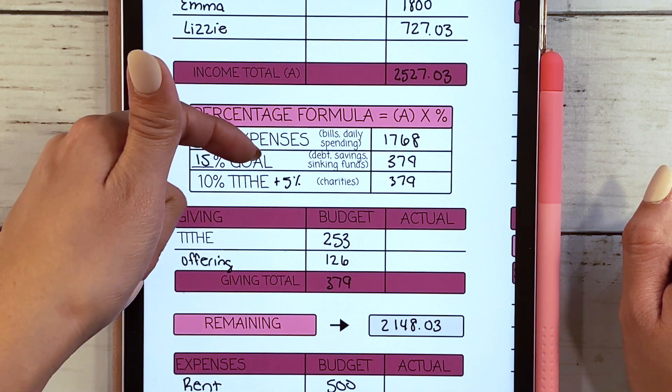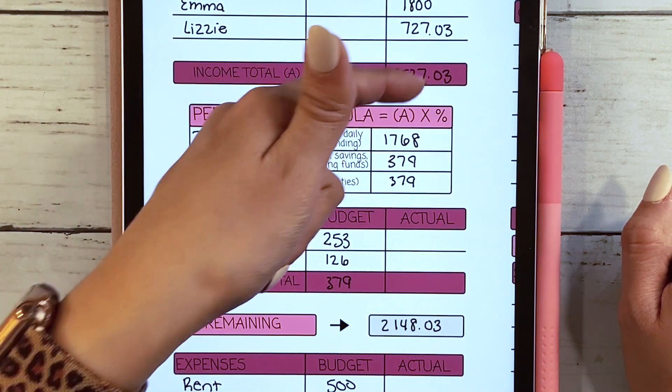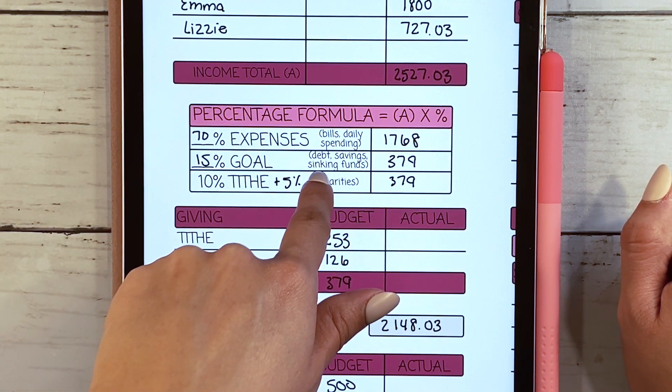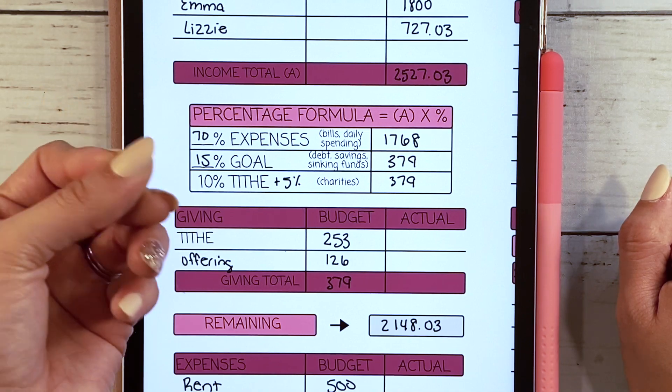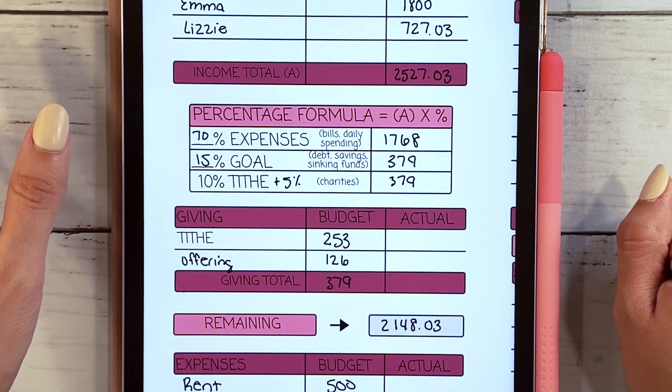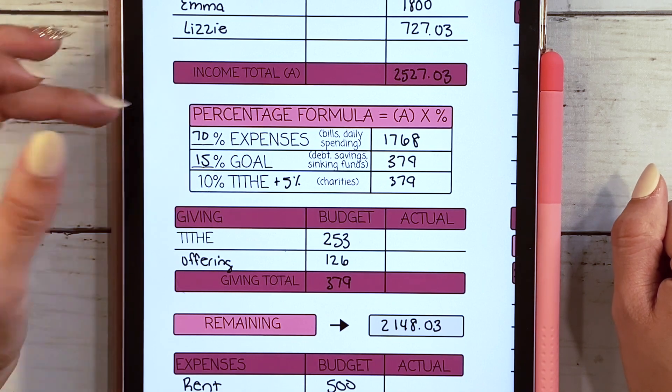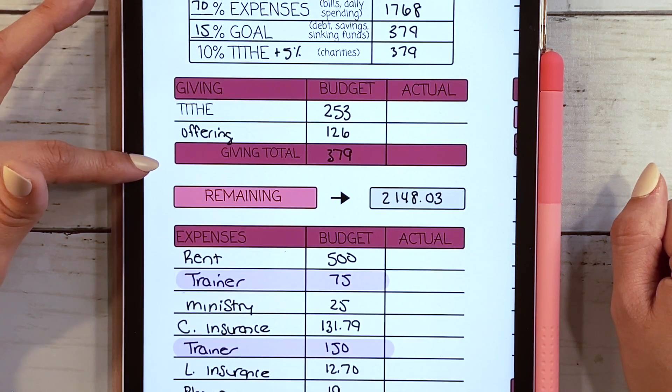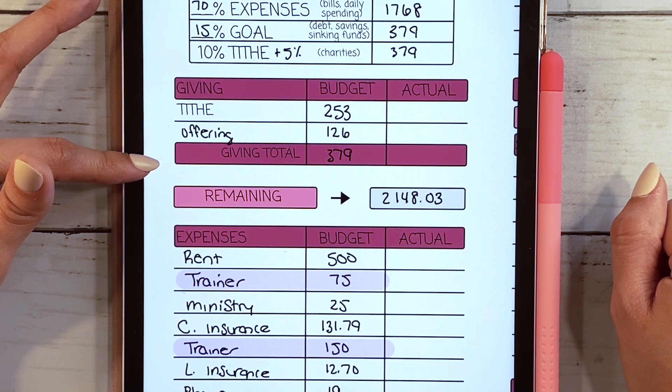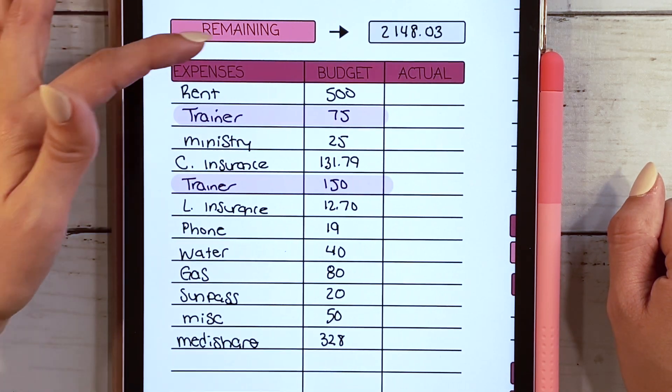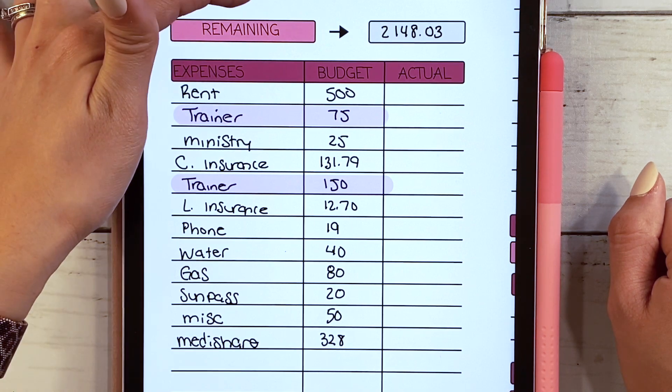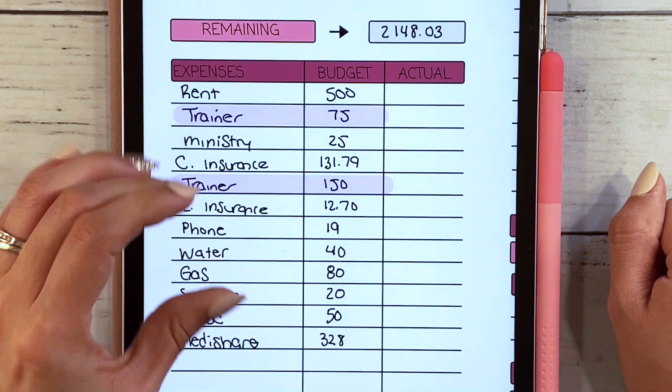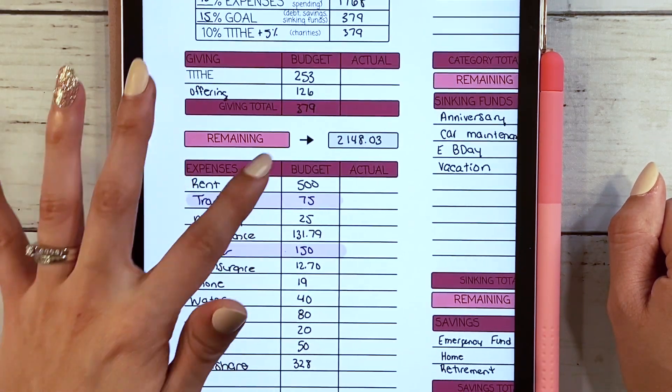70% is going to expenses from the income and then 15% is going to our goal, which is our savings and sinking funds. Depending on your goal you can break it down however you wish. We've already set aside funds for the giving, which comes to $379, and now we look at the remaining total. The income minus the giving leaves us with $2,148 to break down the budget.